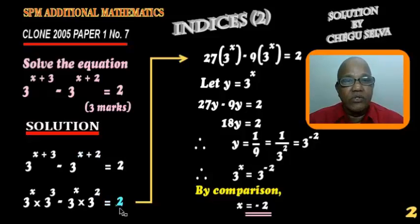3 to the power of 3 is 27, 3 squared is 9, so we have 27 times 3 to the power of x minus 9 times 3 to the power of x equals to 2.